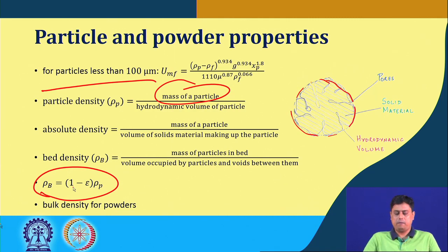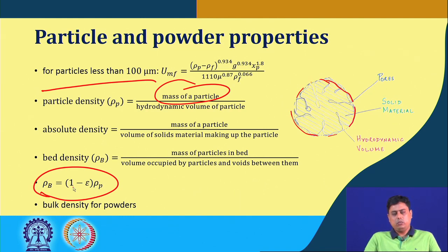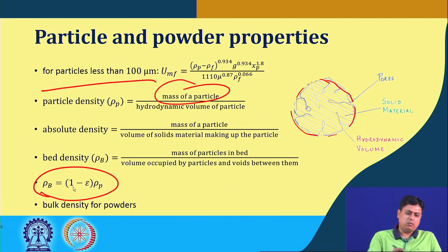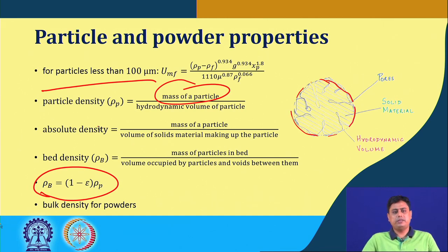This bed density for particulate solids is similarly referred to as bulk density for powdery or very fine materials. We will be frequently using these terms from now on in fluidization: particle density, bed density, and — equivalent for powders — bulk density. These are easy to remember, and if you remember the expressions for bed density and particle density you can always derive the relationships.